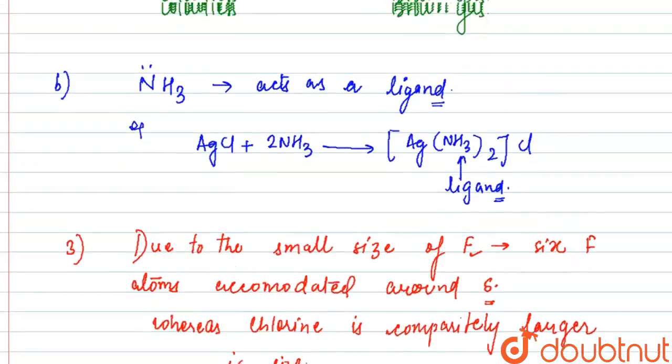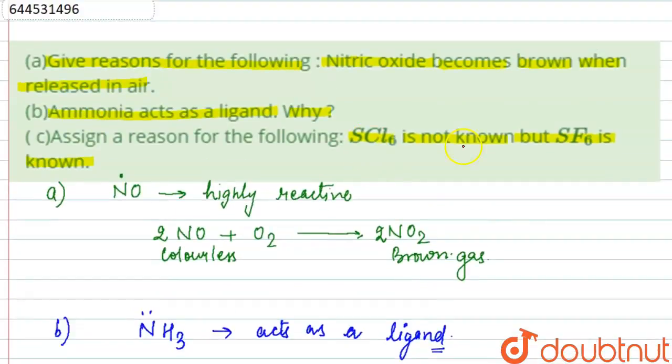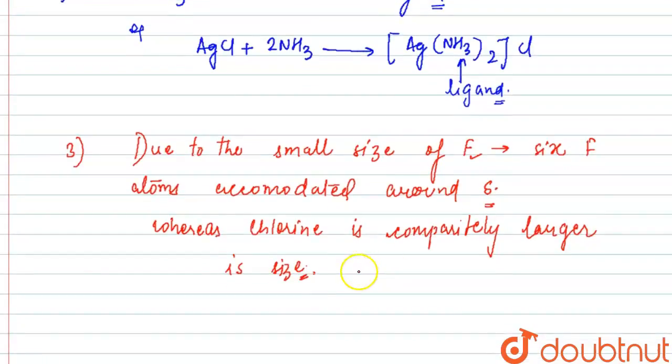So this is the reason why SCl6 is not known but SF6 is known. Due to the size of fluorine, it can be accommodated. I hope this is clear to you. Thank you.